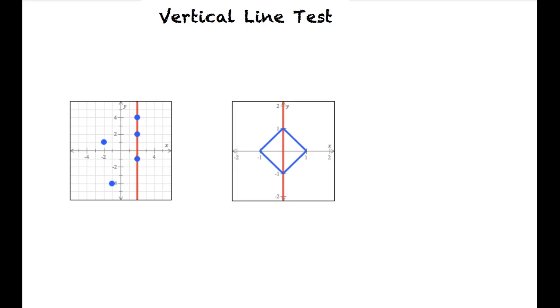This second graph also fails the vertical line test. We can draw a vertical line that intersects the graph twice, so it is not a function.